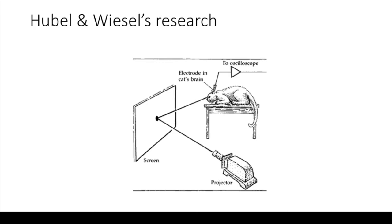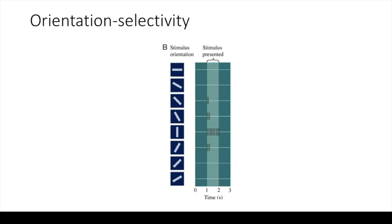They found that in the primary visual cortex, cells don't respond to small spots. Instead, the earliest neurons respond to straight edges of a certain orientation.